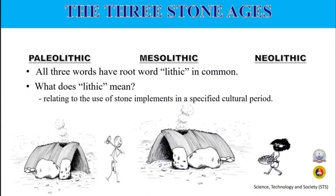These are Paleolithic, Mesolithic, and Neolithic. All three words have the root word 'lithic' in common. Lithic means relating to the use of stone implements in specified cultural periods — relating to or characteristic of a specified stage in the use of stone by humans.